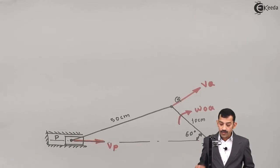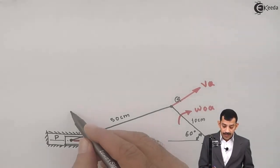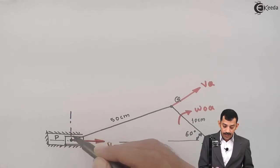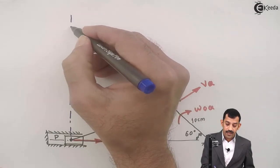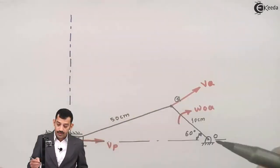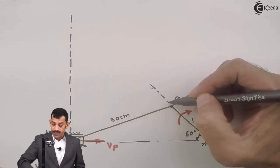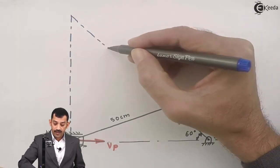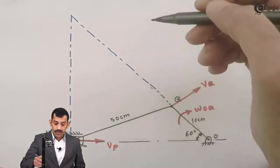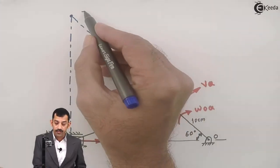On link PQ, we know the direction of velocities at both points P and Q. The ICR is found at the intersection of lines perpendicular to VQ and perpendicular to VP. Perpendicular to VP (which is horizontal) gives a vertical line, and perpendicular to VQ gives the extension of line OQ. Their point of intersection on this vertical line is point I — the instantaneous center of rotation for link PQ.